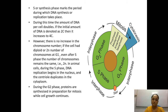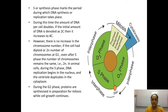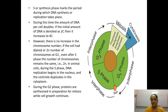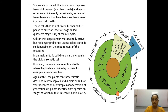During G2 phase, proteins are synthesized in preparation for mitosis while cell growth continues. To summarize: in G1 — growth (cytoplasm increases), in S phase — DNA replicates and doubles, in G2 — protein synthesis occurs. Remember these three points.